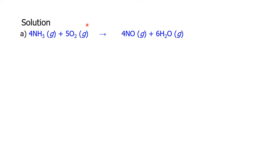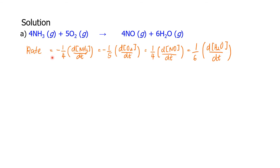We can apply the differential rate equation to this reaction to give the following: rate equals negative 1/4 times the rate of change of NH₃, equals negative 1/5 times the rate of change of O₂ — because the coefficient for oxygen is 5 — equals positive 1/4 times the rate of change of NO, equals 1/6 times the rate of change of H₂O. Note that you can place the negative sign inside or outside the bracket; as long as the term represents a reactant, there will be a negative sign somewhere.